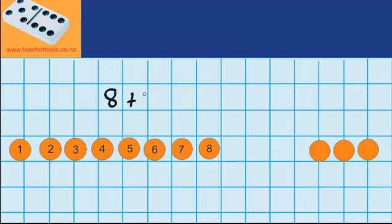8 plus 3 equals something. Now just like last time, I'm going to turn these counters upside down. And now we're going to solve this question by counting on from the larger number.